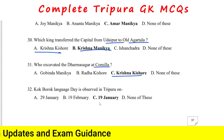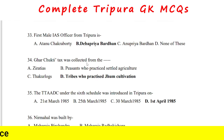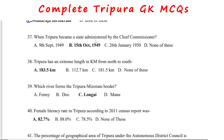Maharaja Krishnamanika excavated the Dharmasagar at Comilla. Khokhborok Language Day is observed in Tripura on 19th January. Gharchutki tax was collected from tribes who practiced jhum cultivation. TTADC under the Sixth Schedule was introduced in Tripura on 1st April 1985.